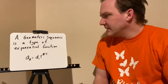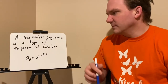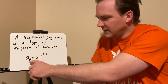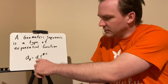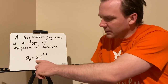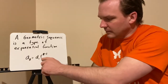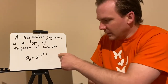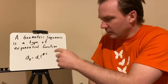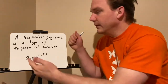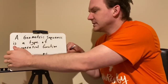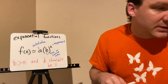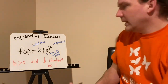A geometric sequence is a type of exponential function. We have a_n equals the first term a_1 times the common ratio to the n minus 1 power, where n is the term you're looking for. That's a type of exponential function, but in a more general sense, exponential functions can address a wider variety.